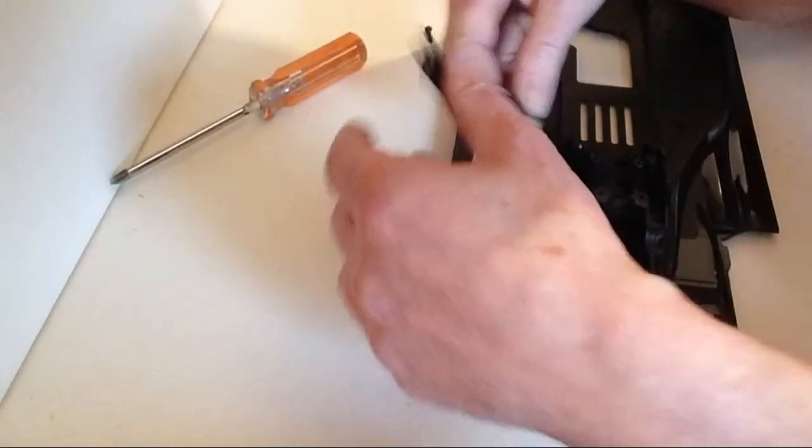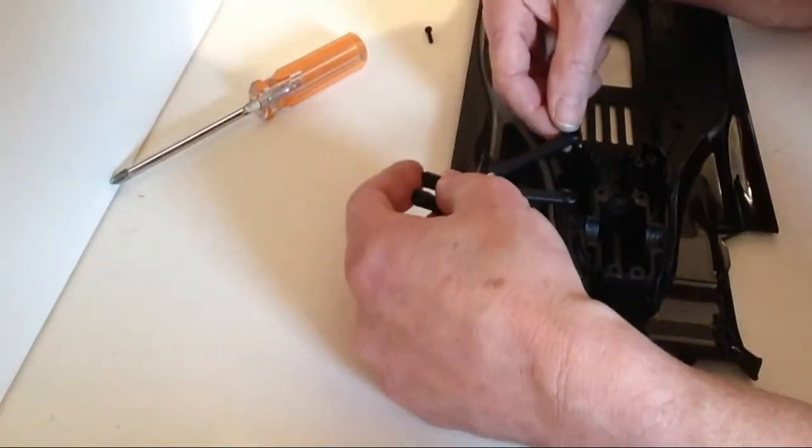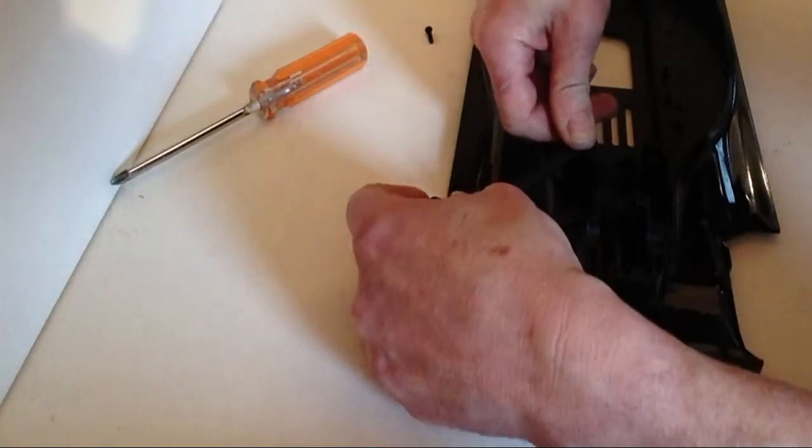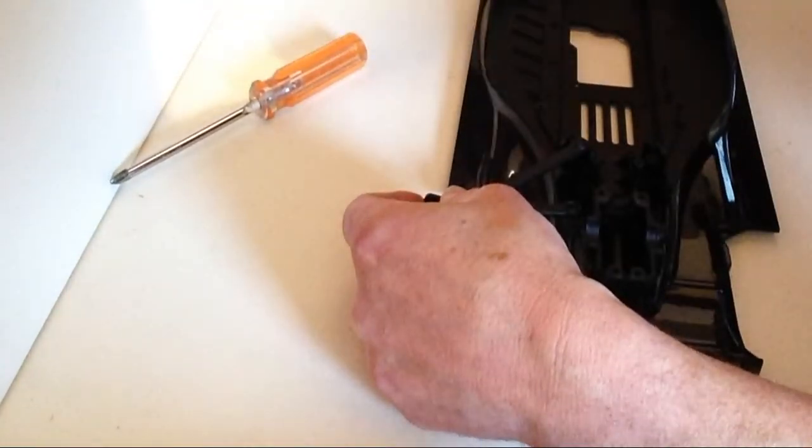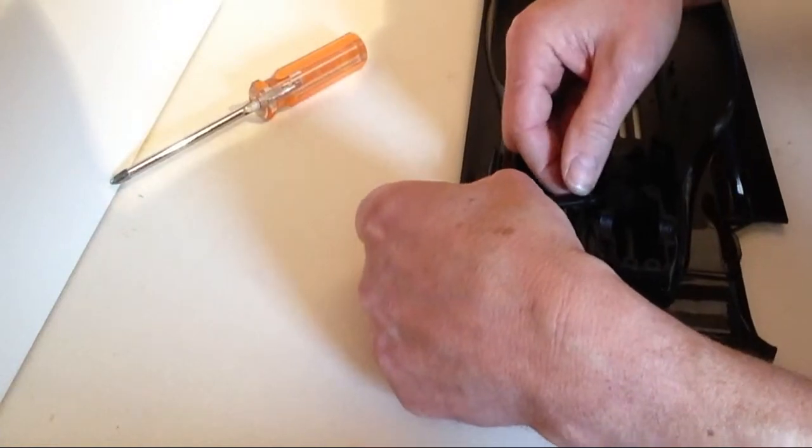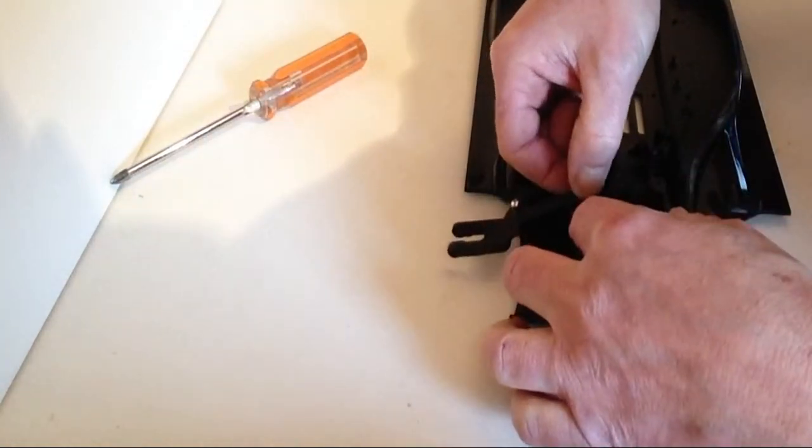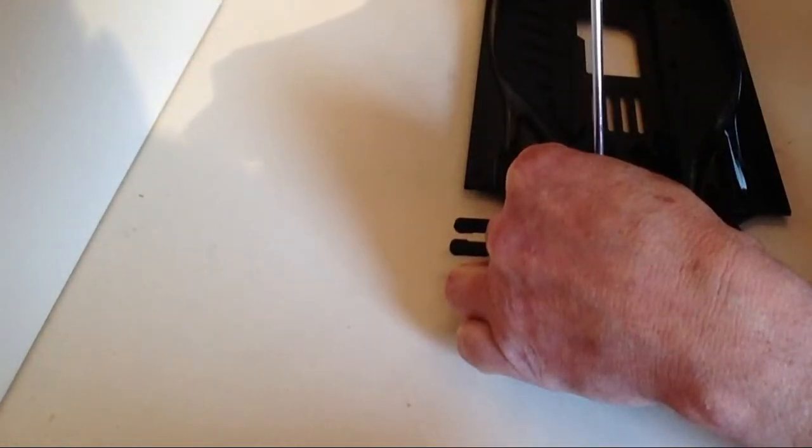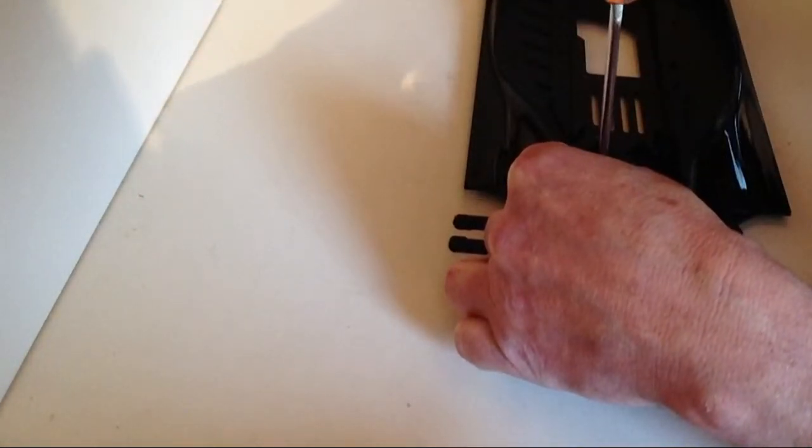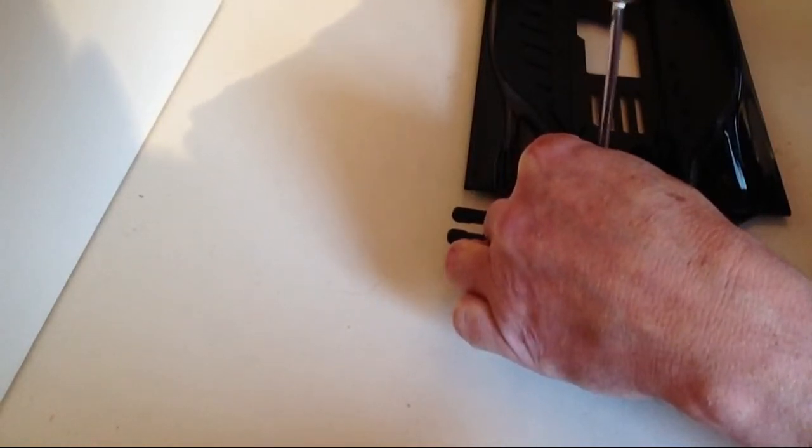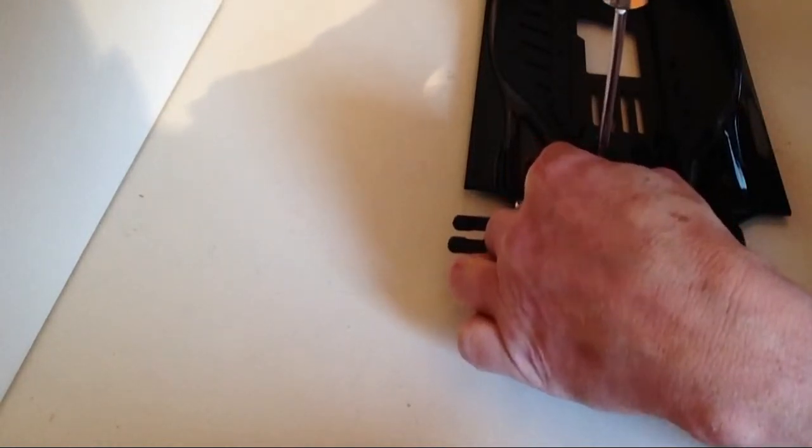Once you have done that, take your rear wishbone, pop that into position like so. So, take the remaining screw that came with this part and then screw that into position like so.